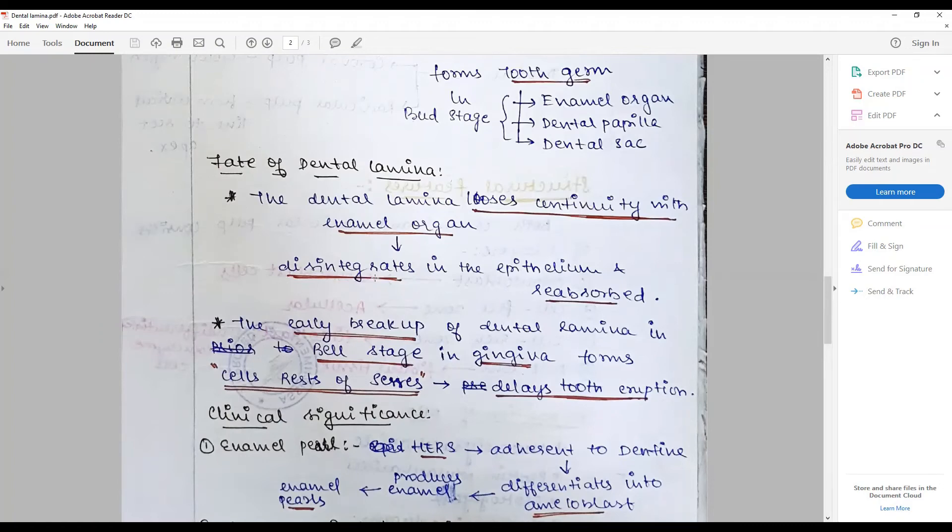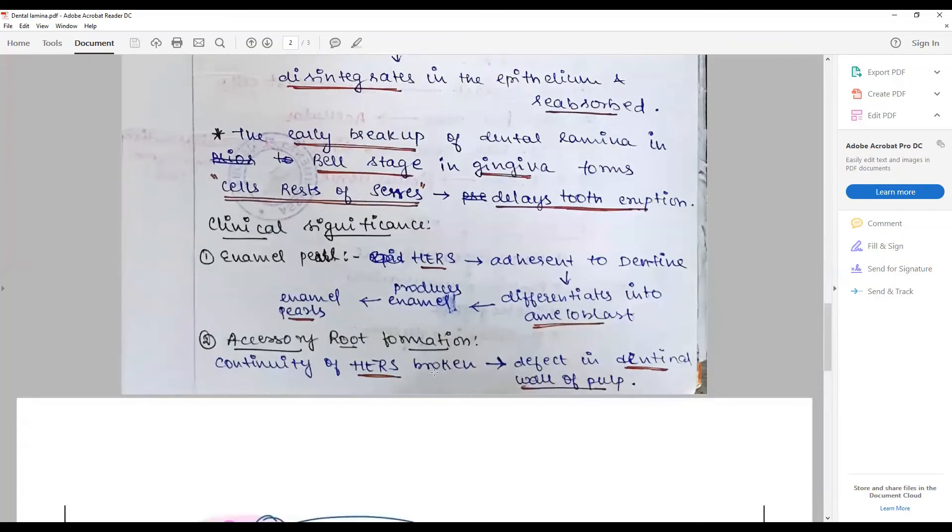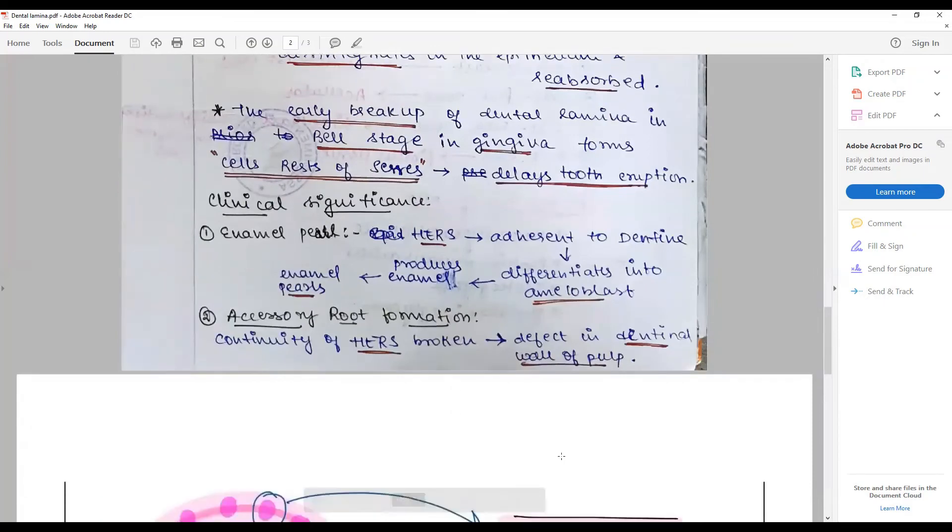They are associated with conditions like enamel pearl and accessory root formation, which are associated with abnormality.